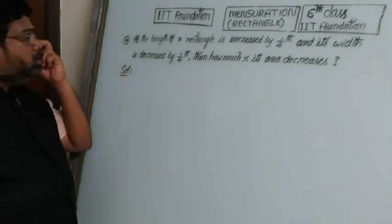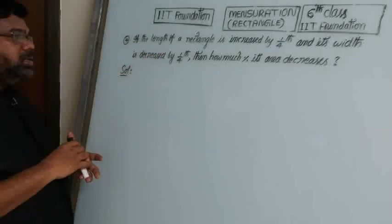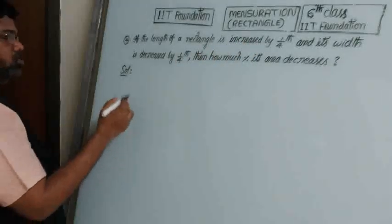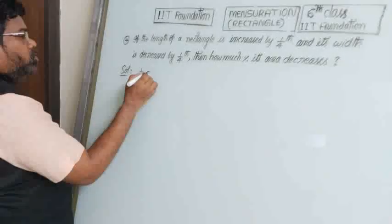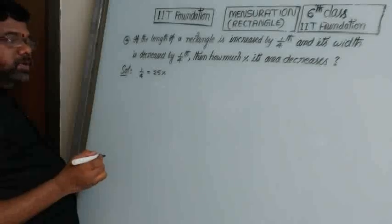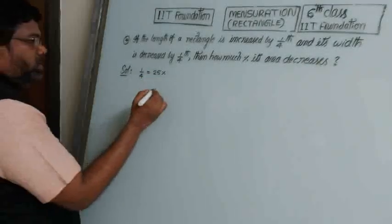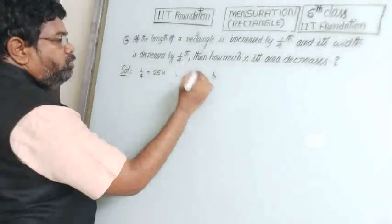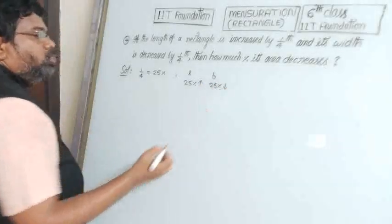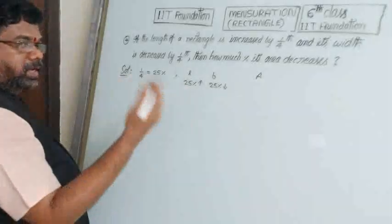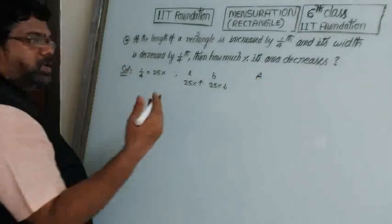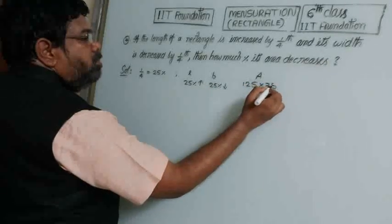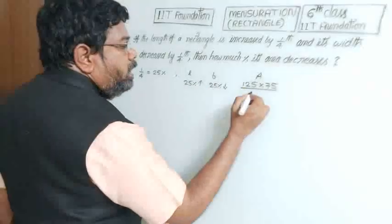Question number 4: if the length of a rectangle is increased by 1/4th and its width is decreased by 1/4th, by how much percent does its area decrease? Convert 1/4th to percentage: 1/4th equals 25%. So length increases by 25% (take 125) and breadth decreases by 25% (take 75). Divide by 100.